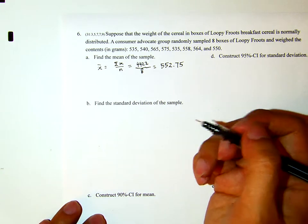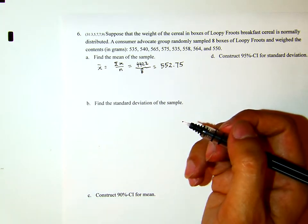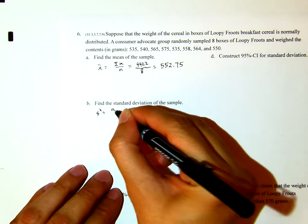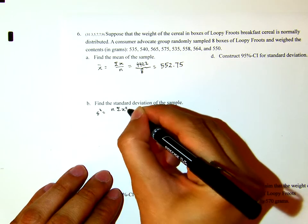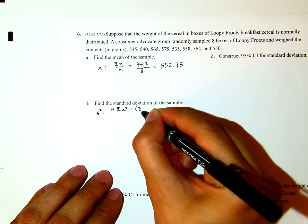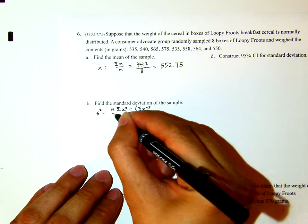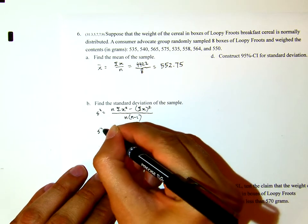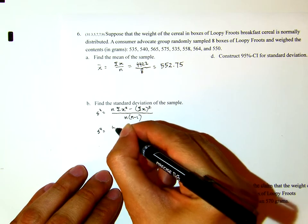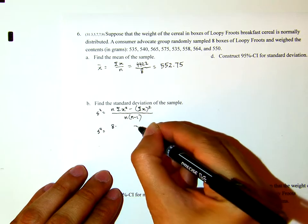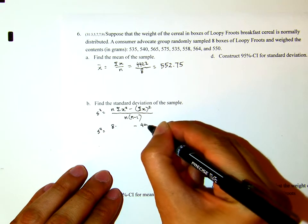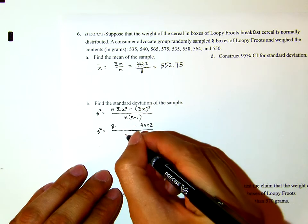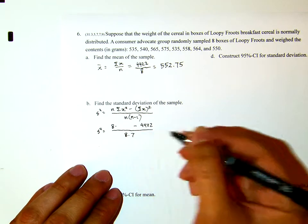Part B: find the standard deviation of the sample. The formula is s squared equals n times sigma X squared minus the quantity sigma X squared, all over n times n minus 1. So s squared equals 8 times the sum of squares minus 4422 squared, over 8 times 7.